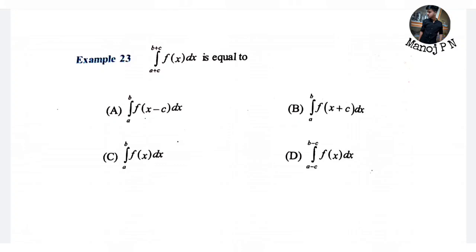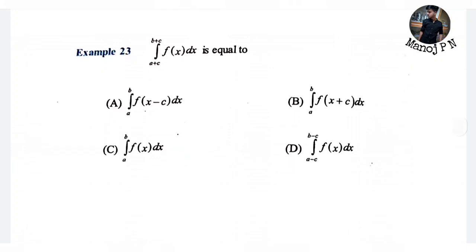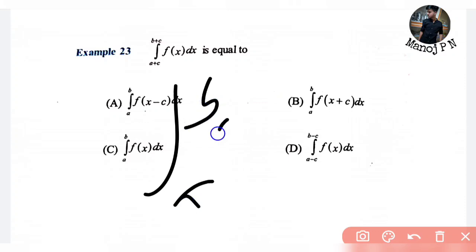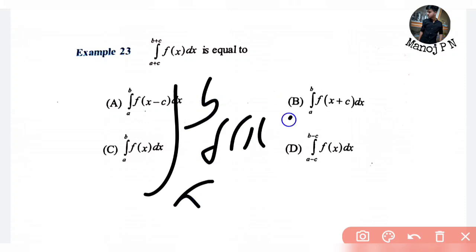Now, this is the question section. Look at the first question. It is the integration from a plus c to b plus c of f(x) dx is equal to one. It is a direct formula. Option B is integration from a to b of f(x plus c) dx.